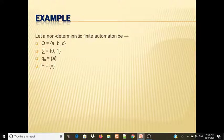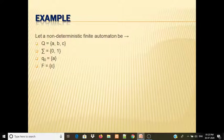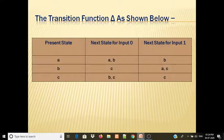Let a Non-Deterministic Finite Automata be: Q equals {A, B, C} — there are three states. Sigma equals {0, 1}. Q0, the initial state, is A. The final state is C, indicated by double arc. The transition function is shown below as a table with present state, next state for input 0, and next state for input 1.